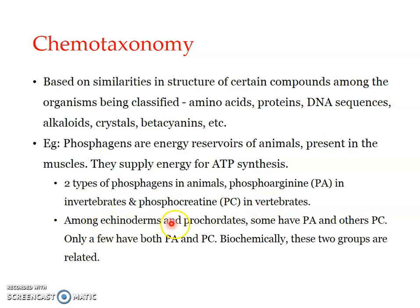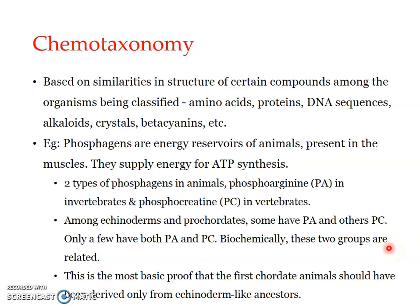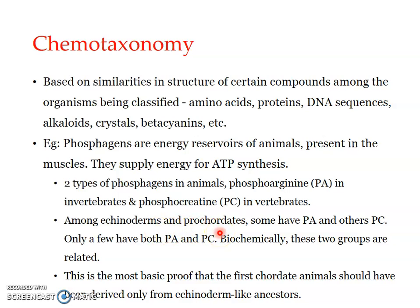Among echinoderms and protochordates, some have phosphoarginine and some have phosphocreatine — only a few have both. Biochemically these two groups are hence related. This is the most basic proof that the first chordate animals should have been derived from an echinoderm-like ancestor. It indicates that vertebrates have evolved from an ancestor which had phosphocreatine, belonging to the echinoderm-protochordate group.